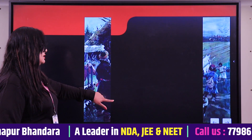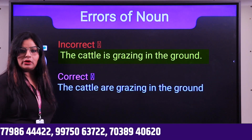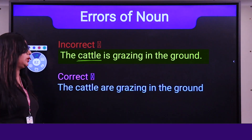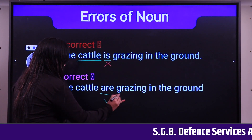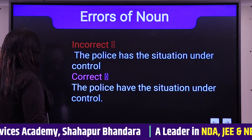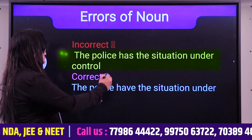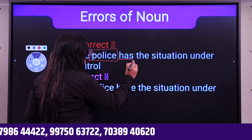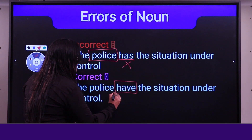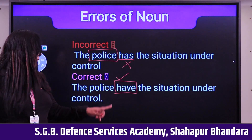Example sentence: 'The cattle is grazing in the ground.' Since cattle is plural, 'is' is wrong — it should be 'are.' Next: 'The police has the situation under control.' Because police is a plural noun, 'has' (used with singular) is wrong. It should be 'have.' If it were one individual — a police officer or policeman — then singular would be correct, but 'police' as a collective noun is plural.